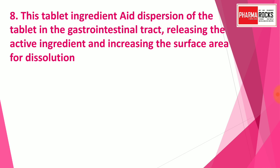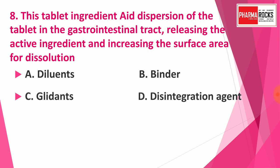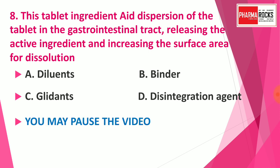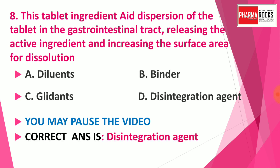Question number eight: This tablet ingredient aids dispersion of the tablet in the gastrointestinal tract, releasing the active ingredients and increasing the surface area for dissolution. Options: Option A: diluent, Option B: binder, Option C: glidants, Option D: disintegrating agent. The correct answer is Option D: disintegrating agent. Disintegrating agents disintegrate the tablet in the GI tract, release the active ingredient, and increase the surface area for dissolution.